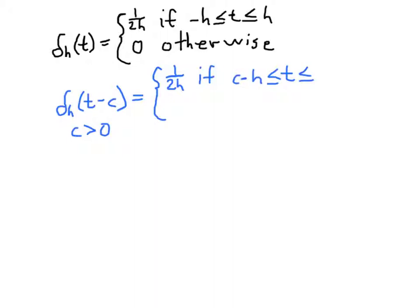So from c minus h to c plus h, the function has the value 1 over 2h. And it's zero otherwise.